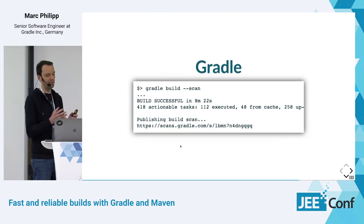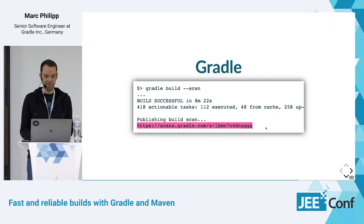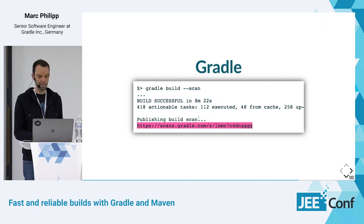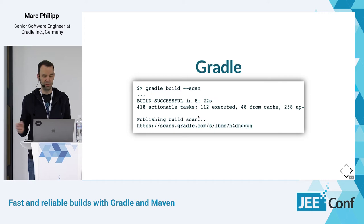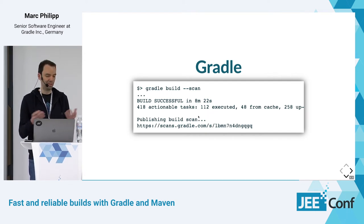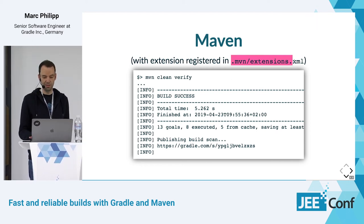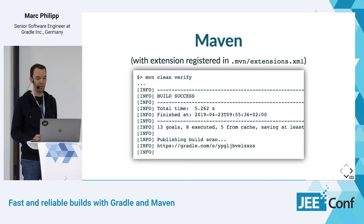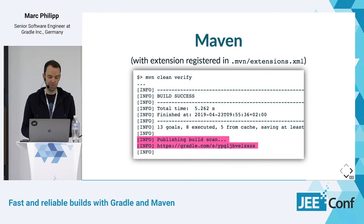For Gradle, it's already built in — all you have to do is pass '--scan' on a Gradle build, and at the end you get a build scan URL. This can be a public URL on the public instance we provide for free. If you have Gradle Enterprise, you can host the server on your own infrastructure and get a private build scan URL you can share with coworkers without uploading data to a public location. For Maven, you register the extension in 'extensions.xml' as shown in the demo, and by default it always publishes — so running a regular Maven build gives you a build scan URL at the end.